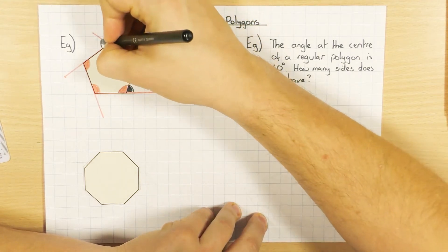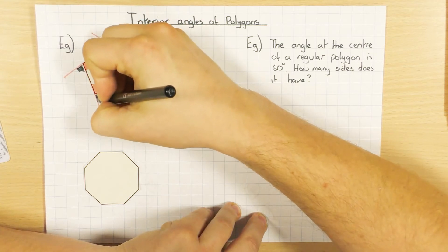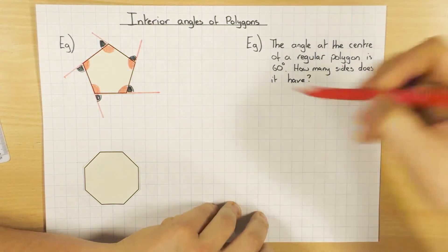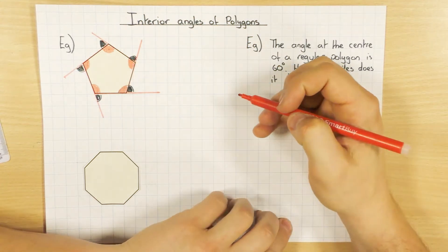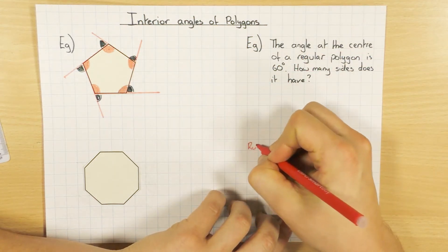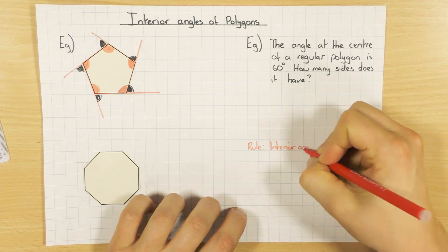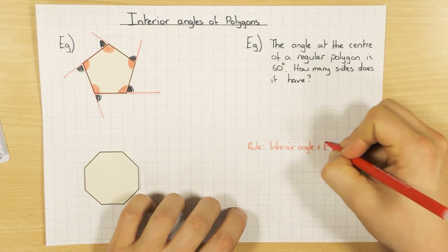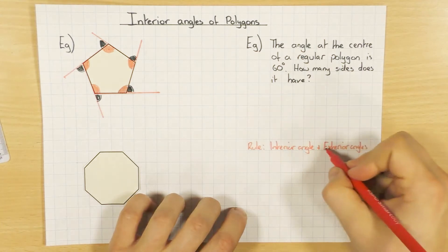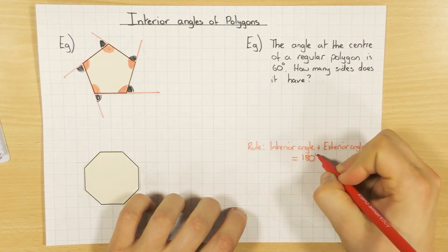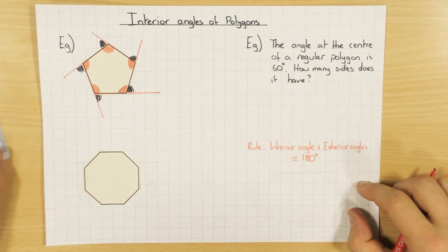To work out exterior angles, you can have a look at my exterior angle video. Just so you know: interior angles are inside, exterior angles are on the outside if you extend all the sides. A rule you might have just spotted is that interior angles plus exterior angles — because they're on a straight line — when you add the two together they equal 180 degrees. That's the first fact that's always handy to know: the interior and the exterior add up to 180 degrees.